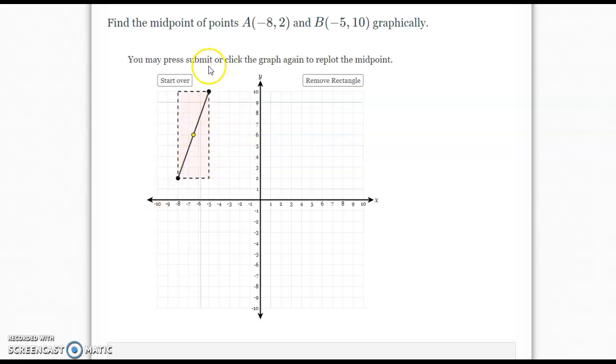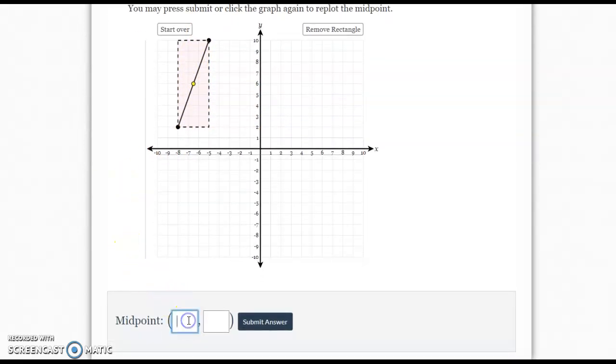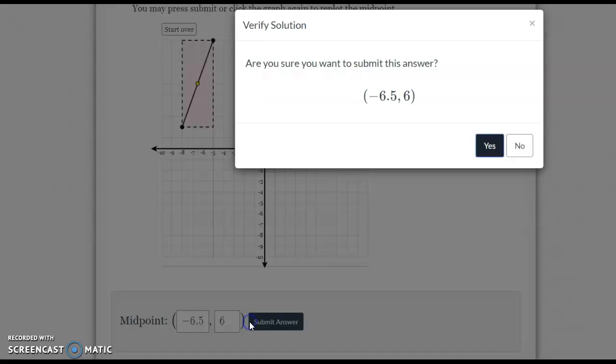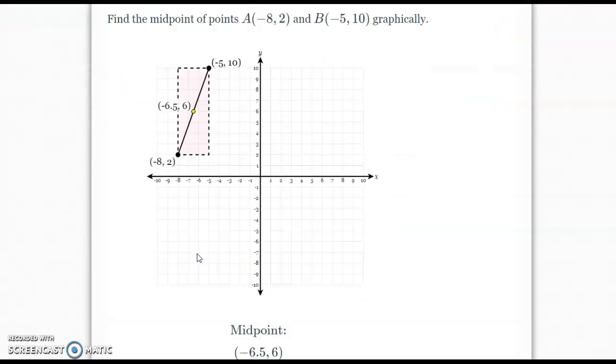So let's go ahead and plot that point down here. That's in between negative 6 and negative 7, which is going to be -6.5. And then my y-coordinate was at positive 6. And there we go. Again, we used the reasoning. The length of the rectangle was 3. Halfway from 3 is 1.5. The height of the rectangle was 8. Half of 8 is 4. And so we just plug that in.